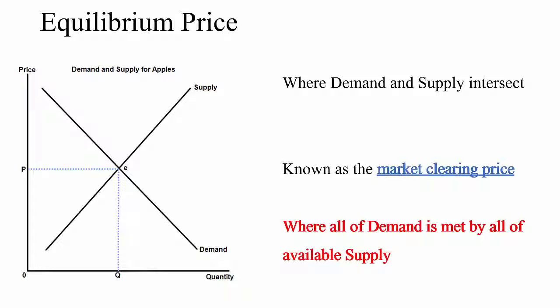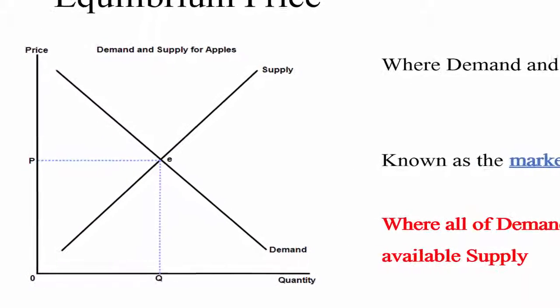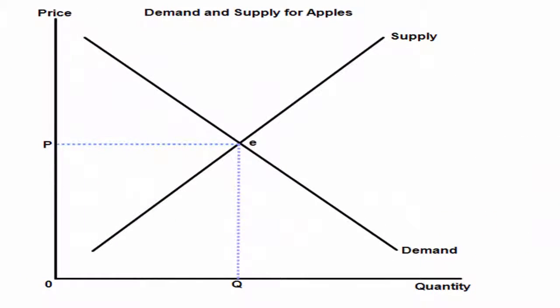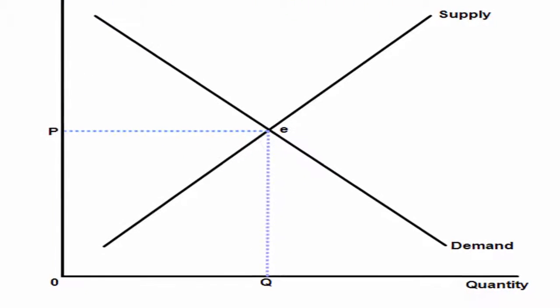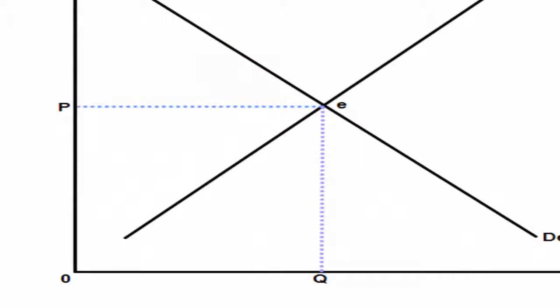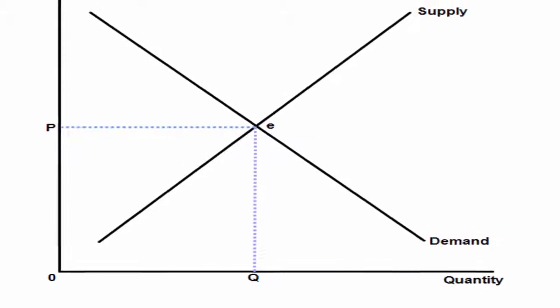Equilibrium price occurs where demand and supply intersect — where the demand curve hits the supply curve and demand and supply are equal — giving you equilibrium price and equilibrium quantity. On the graph on the left there's the E, which stands for the equilibrium, and the price and quantity at that level of equilibrium.